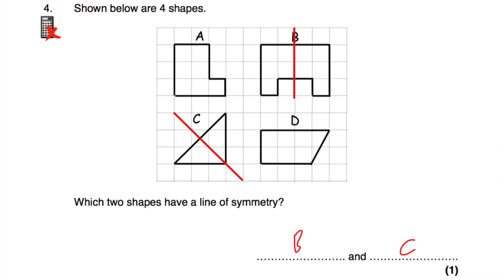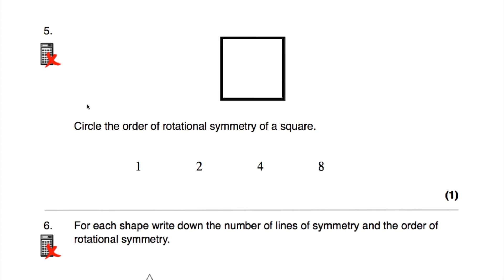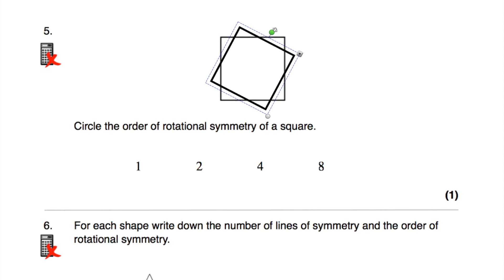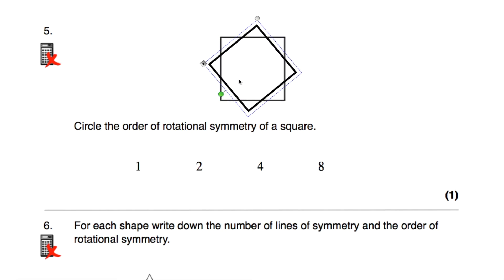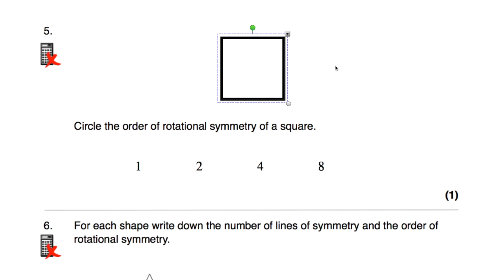Question number 5: we've been given a square and asked what the order of rotational symmetry of a square is, with choices 1, 2, 4, and 8. Rotating the square through 360 degrees and counting how many times it lands on itself: 1, 2, 3, 4. So the order of rotational symmetry of this square is 4.